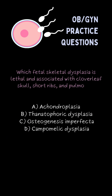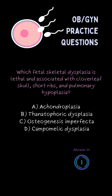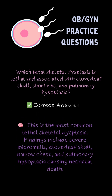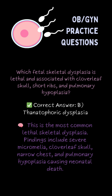Which fetal skeletal dysplasia is lethal and associated with cloverleaf skull, short ribs, and pulmonary hypoplasia? B. Thanatophoric dysplasia.